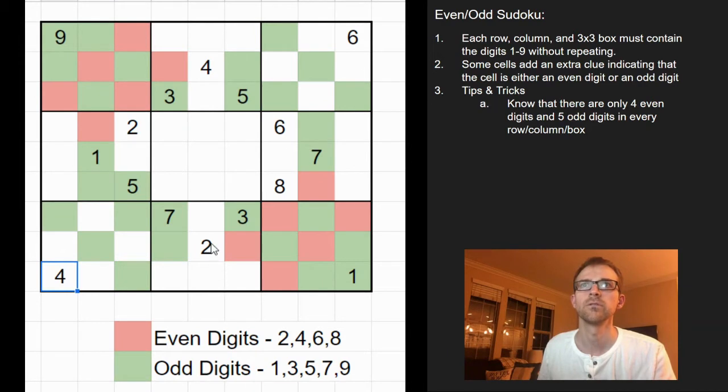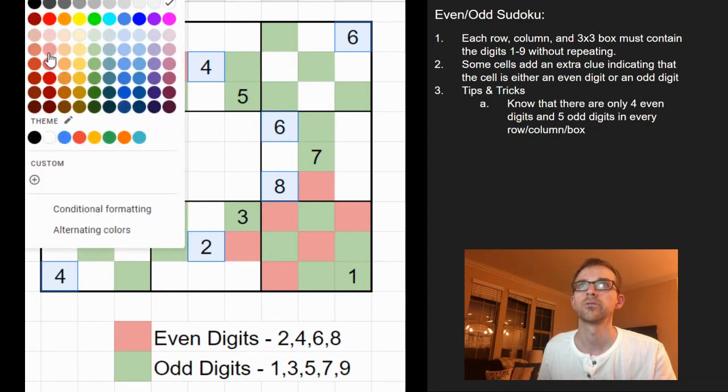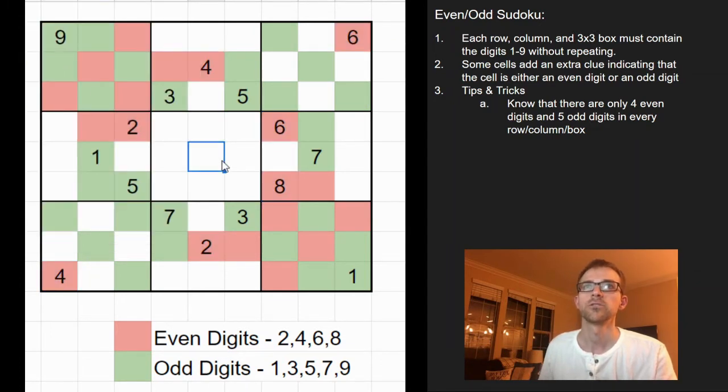And then all the even ones. 4, 2, 8, 6, 6, 4, and 2. And we'll color those red. And so what I would do is then scan each row, column, 3 by 3 area and see if I can fill out even more.